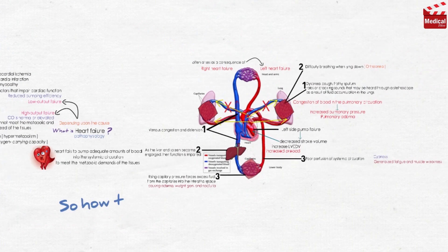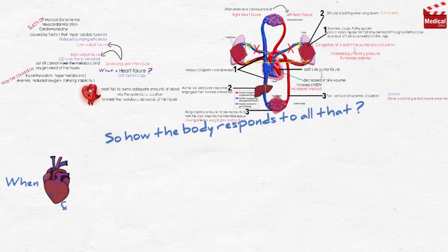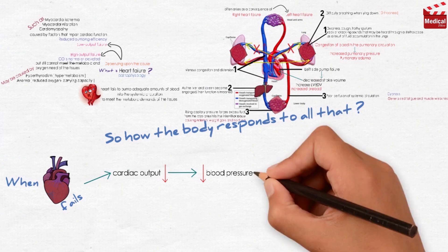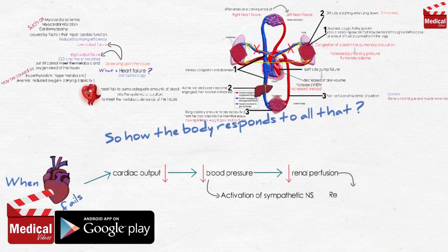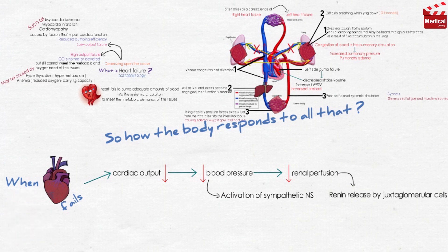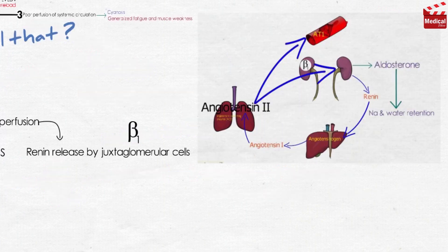When the heart fails, cardiac output decreases, leading to a decrease in blood pressure, which decreases renal perfusion, leading to activation of the sympathetic nervous system and renin released by juxtaglomerular cells in renal afferent arterioles due to both the decreased renal perfusion and sympathetic stimulation of beta-1 receptors. As we know from previous lectures, renin ultimately leads to the production of angiotensin-2 in the plasma and the release of aldosterone from the adrenal gland.